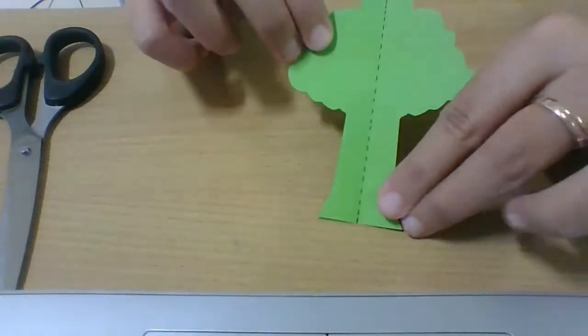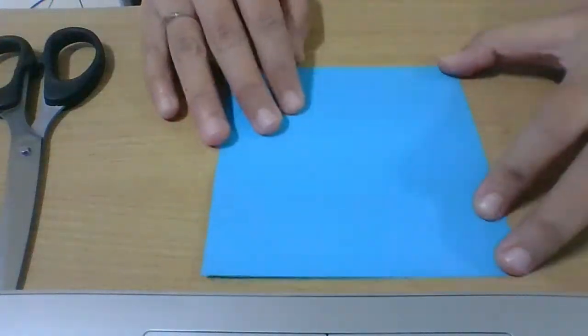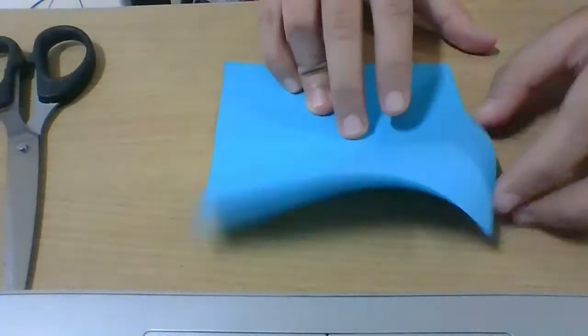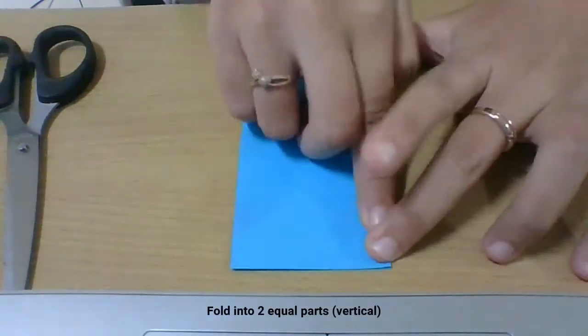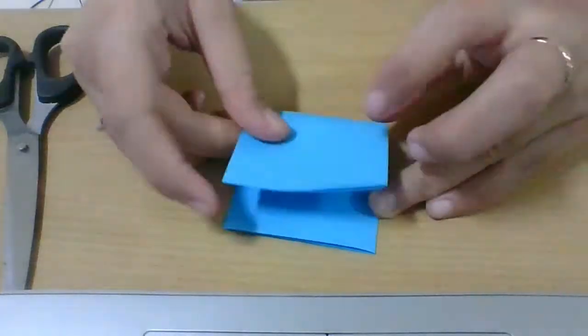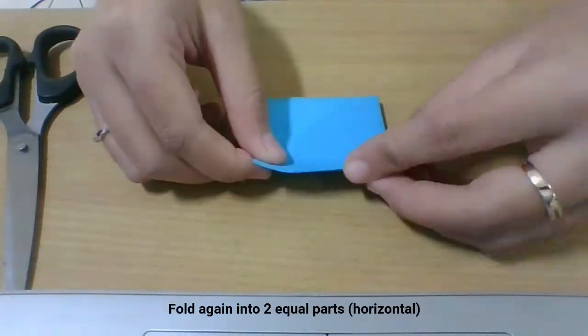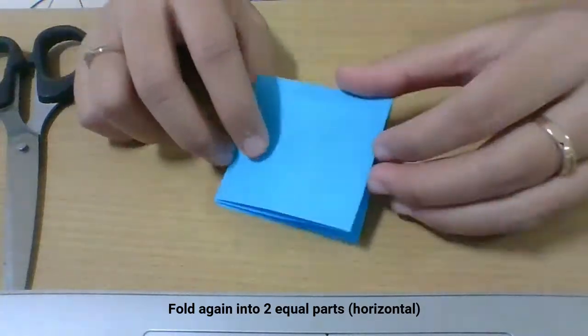Okay, we are done for the first shape. Next, the second shape. Take another origami paper with different color and then fold into two equal parts. And then fold again into two equal parts horizontally, then we will see like a square.